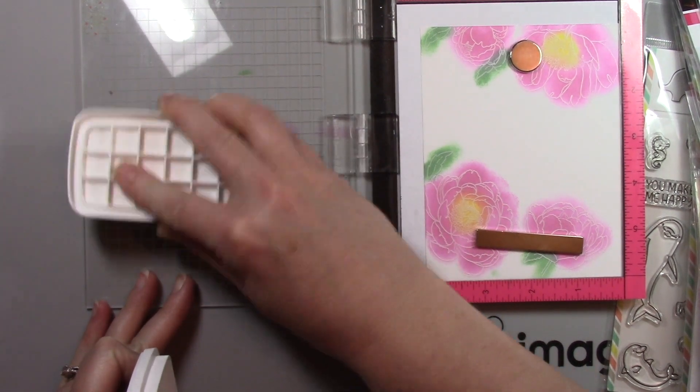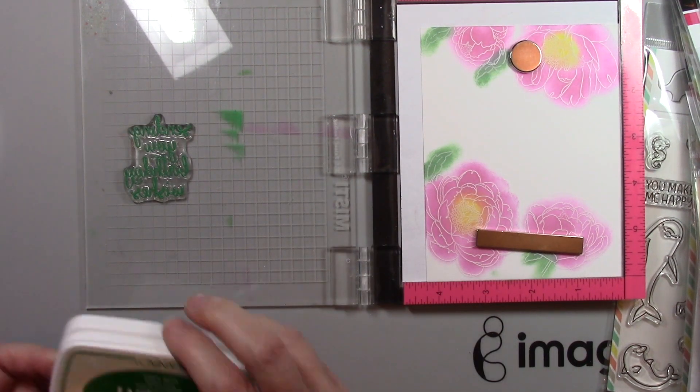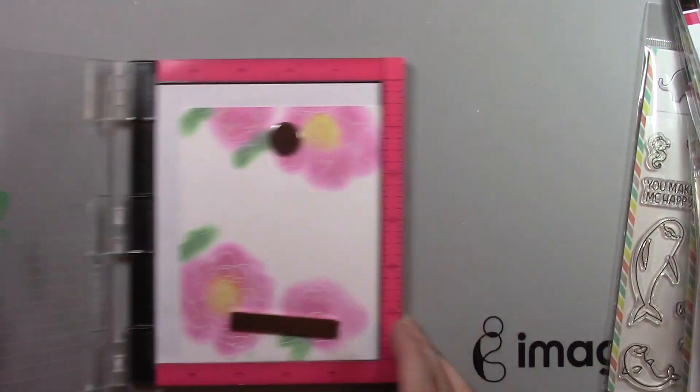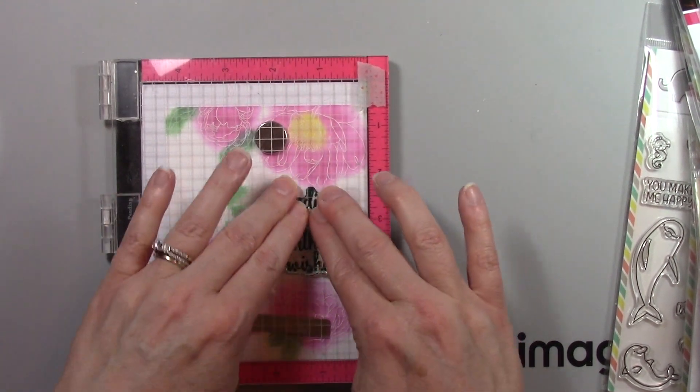Now I'm adding a sentiment to the vellum and because I'm stamping on vellum again I'm going to reach for my Stazon Pigment Ink and this happens to be a green color. I will put the description and links to the colors that I use so that you can use them yourself.